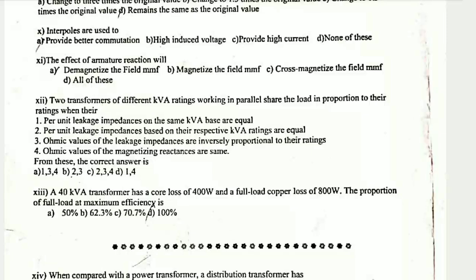Question 13: A 40 KVA transformer has core loss of 400 W and full load copper loss of 800 W. The proportion of full load at maximum efficiency is found using: x equals square root of (core loss divided by copper loss) = √(400/800) = √0.5 = 0.707. So maximum efficiency occurs at 70.7% of full load. The answer is option C.